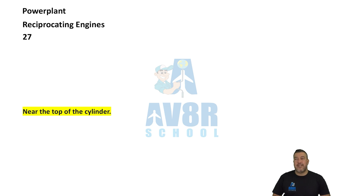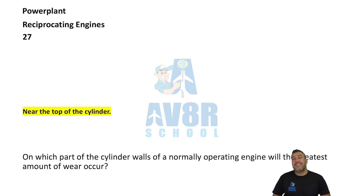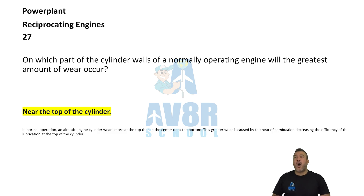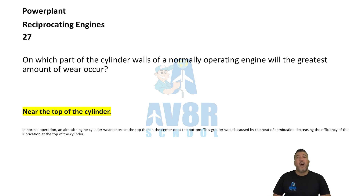Number 27. On which part of the cylinder walls of a normally operated engine will the greatest amount of wear occur? Near the top of the cylinder.